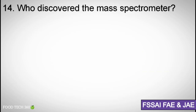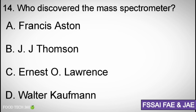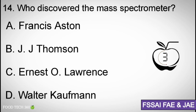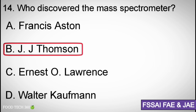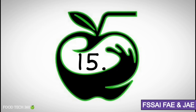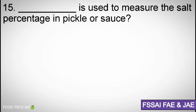Question number fourteen: Who discovered the mass spectrometer? Options: (a) Francis Aston, (b) J.J. Thomson, (c) Ernest Lawrence, (d) Walter Koffman. Correct answer: (b) J.J. Thomson.